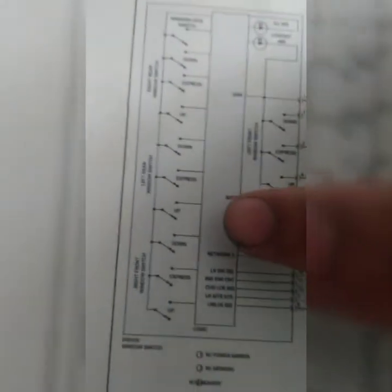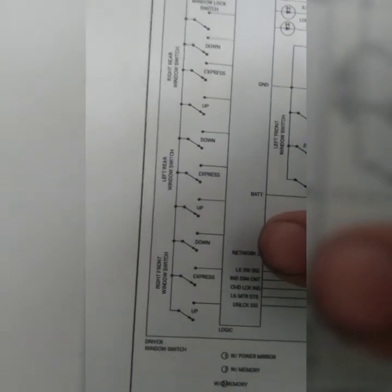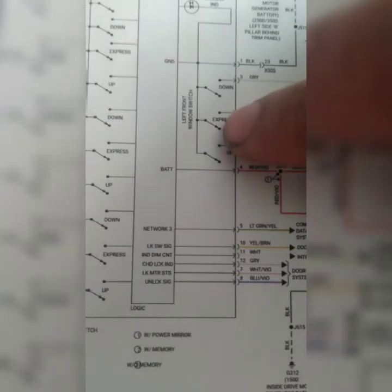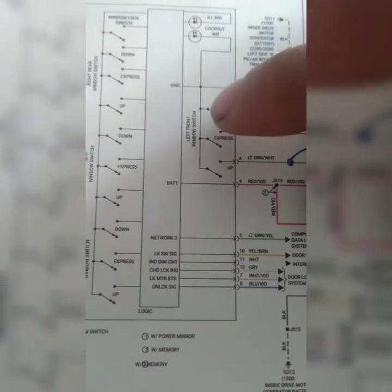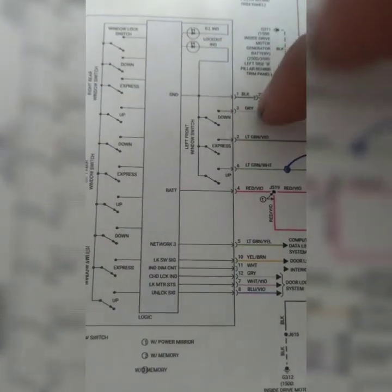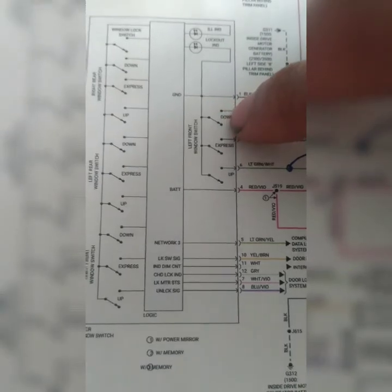You can see here the little tab for express. That's when you press on the tab lightly and it automatically rolls down your window. Or if you want to roll it down yourself completely, just hold the tab down. There's down and then there's up. It's a ground controlled circuitry.